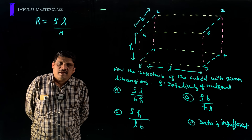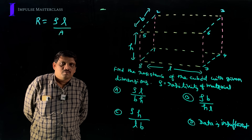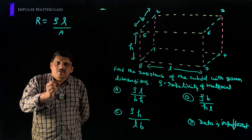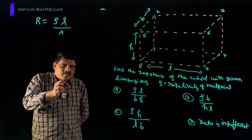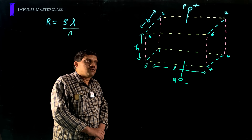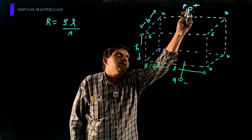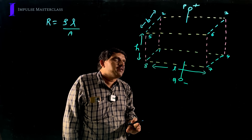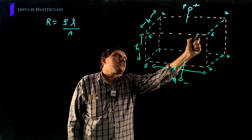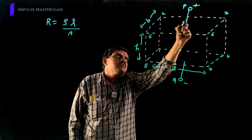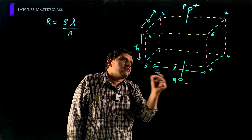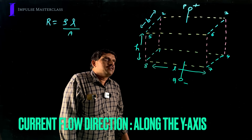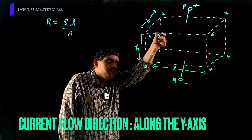Now I will explain how to measure L and area in this example. The L value and A value depend on the points where the potential difference is applied. For example, if the battery is applied between point P and point Q — higher potential at P, lower potential at Q — that means higher potential is applied to face 2365 and lower potential to face 1478. Current flows from higher to lower potential, along the line P to Q.